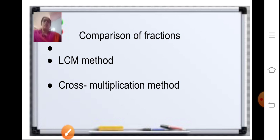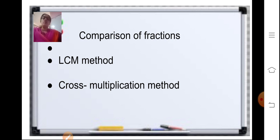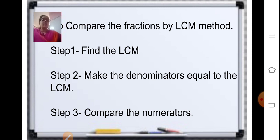To compare two fractions we have two methods: the LCM method and the cross multiplication method. Cross multiplication is easy — you cross multiply the numerator of one fraction with the denominator of the second. For the LCM method, first find the LCM of the two denominators, make the denominators equal to the LCM, then compare the numerators.